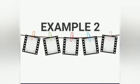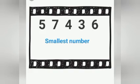Let's go to the next example. Here also we have five digits: 5, 7, 4, 3, 6. Now we form the smallest number using these five digits. We should arrange them in ascending order, or small to big. Tell me, Dios, which number is smallest? Yes, very good. Three.